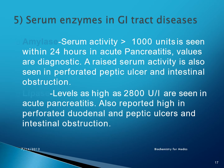Regarding enzymes used in gastrointestinal tract diseases including acute pancreatitis: amylase serum activity less than 1000 units is seen within 24 hours in acute pancreatitis and the values are diagnostic. Raised serum amylase activity is also seen in perforated peptic ulcer and intestinal obstruction. Lipase levels as high as 2800 units per litre are seen in acute pancreatitis and are also reported high in perforated duodenal and peptic ulcers and intestinal obstruction.